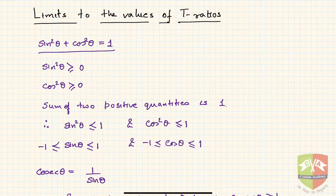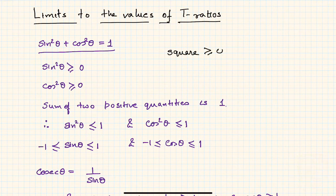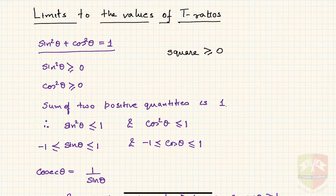Since sin²θ + cos²θ = 1, we know that sin²θ is always greater than or equal to zero. Why? Because it is a square term — squaring anything always gives a non-negative result. Whether the number is negative or positive, its square is always positive or zero. So sin²θ ≥ 0.